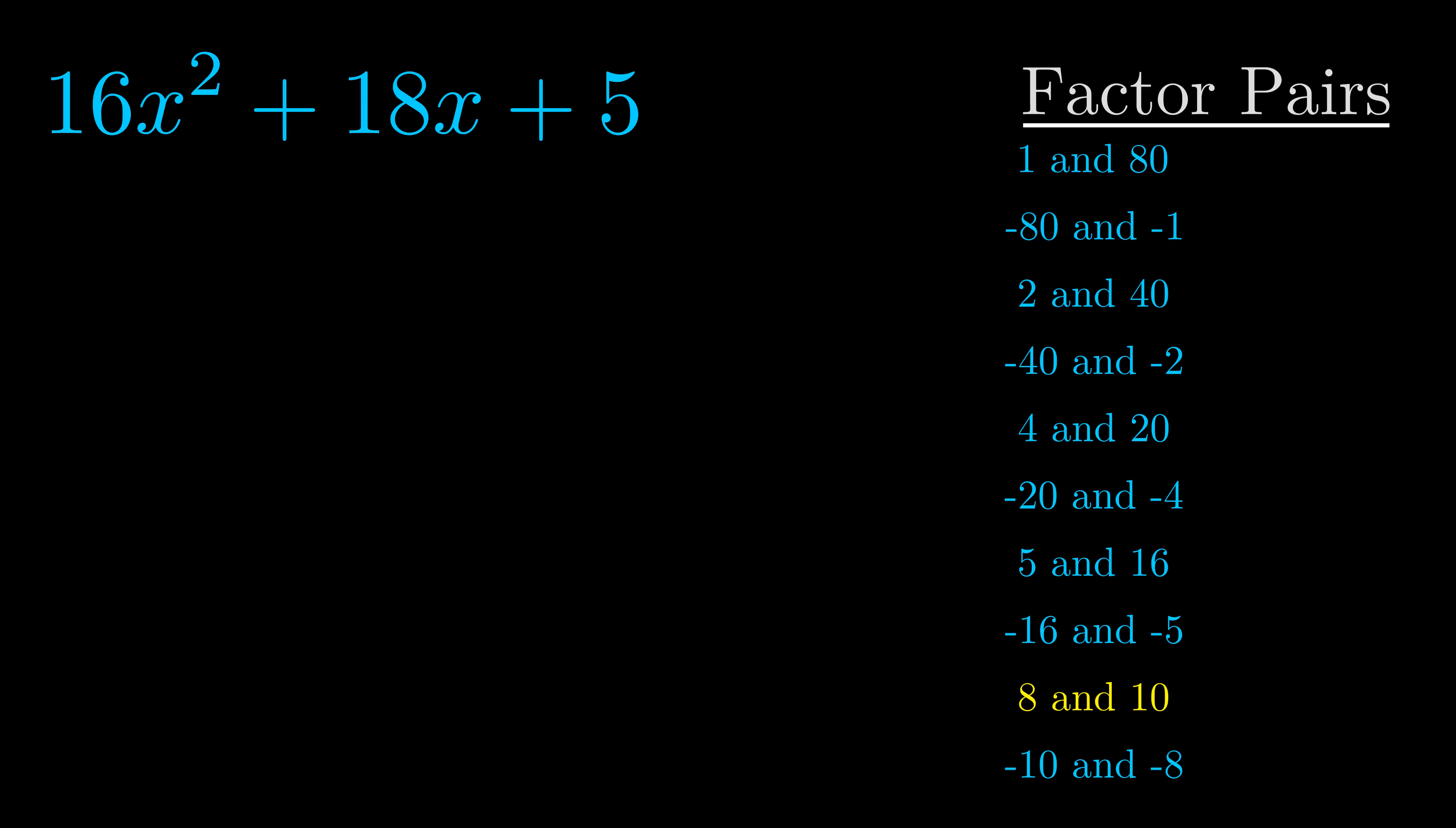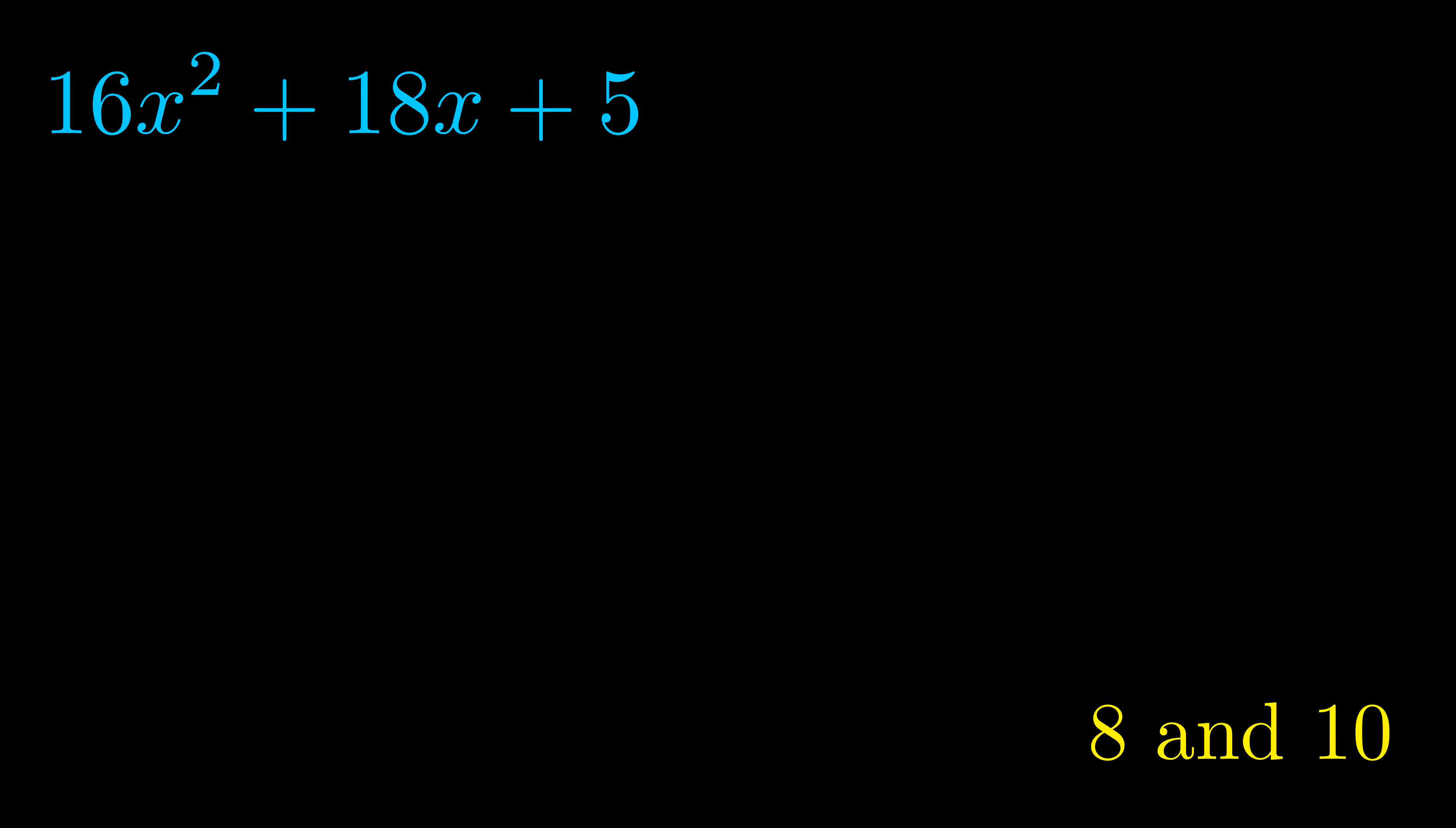And really this is the only factor pair that we need. Now once we have this factor pair, what we want to do is use it to split up the b value.